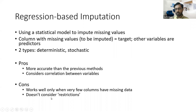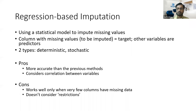Another disadvantage is that it doesn't consider restrictions. For a variable like income, the linear regression model could give a negative value, which is wrong. Statistical models can sometimes produce extreme, outlier, or nonsensical values. These are restrictions the model does not consider, so you will still have to look at the data and adjust the imputation for those values — that is some extra work you may have to do.